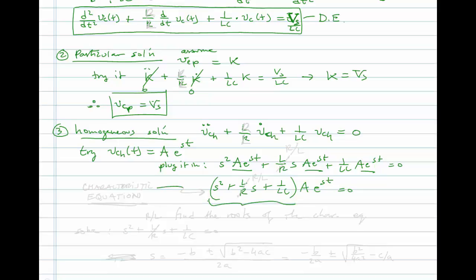So we'll plug it in and we'll get, when we take the second derivative we'll get s squared out front. When we take the first derivative we'll get s, and we see that we have the same A e to the st throughout. So let's collect terms and factor out A e to the st. And this here is the characteristic equation. It tells us everything about the natural or homogeneous transient response. It's very important. So we need to find the roots of the characteristic equation.